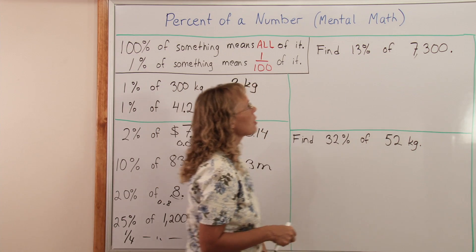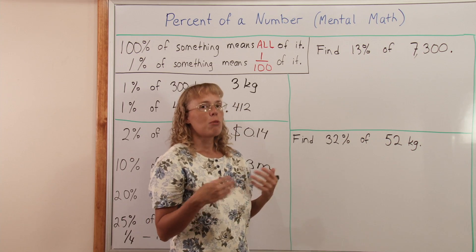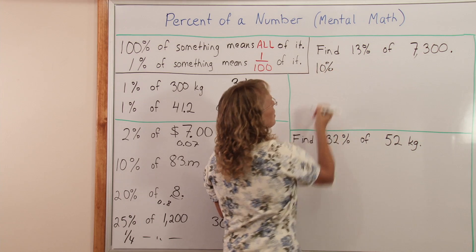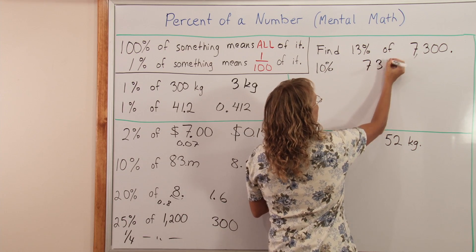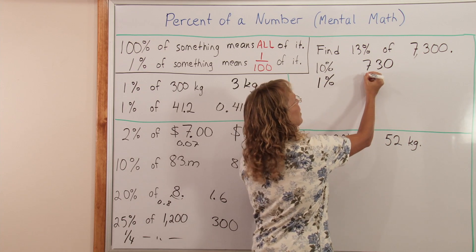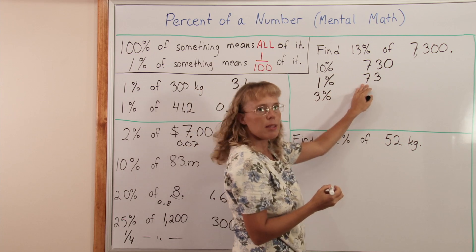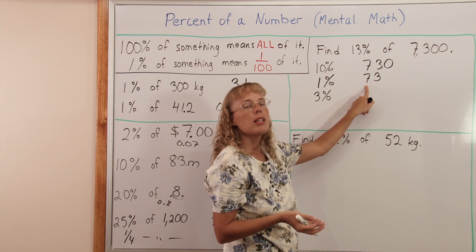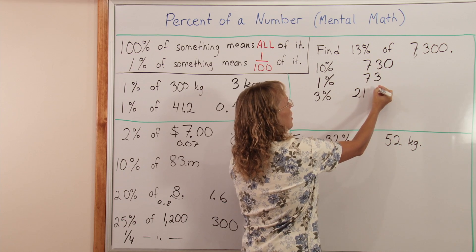Find 13% of 7,300. We'll do this in parts. We'll first find 10% of it, then 1% of it, then 3% of it, and then add. 10% of it is we divide this number by 10 and we get 730. Then we'll find 1% of it. You can take this number and divide by 10 again to get 73. Then 3%: take this number times 3. That's 70 and 3. Now 70 times 3 is 210, and 3 times 3 is 9.